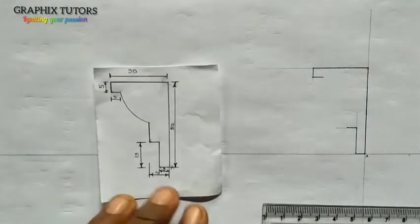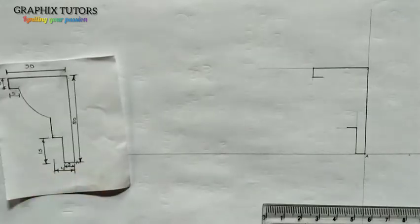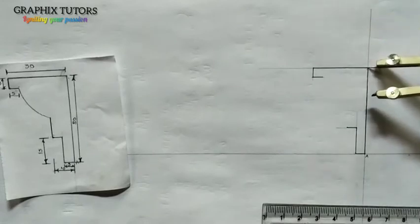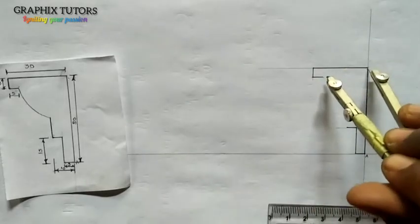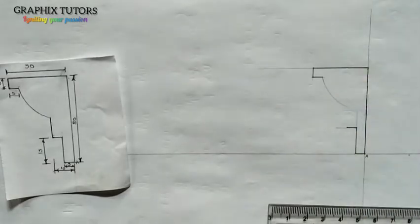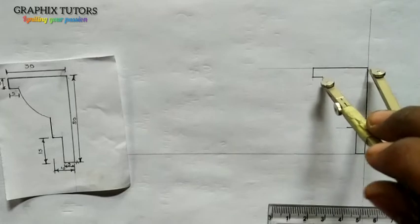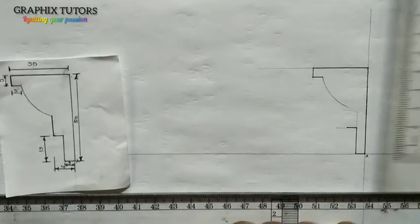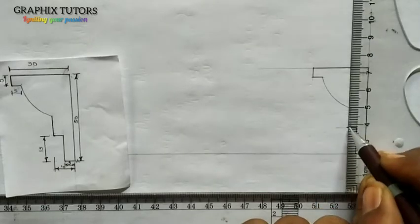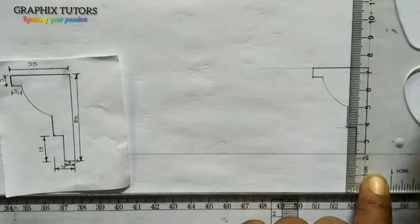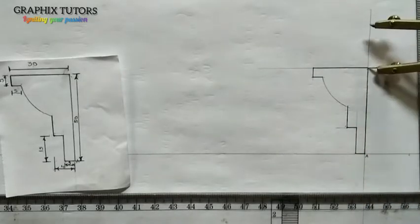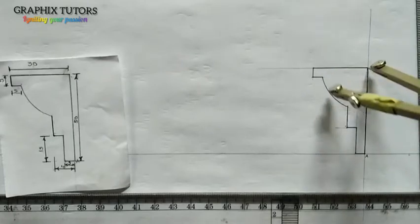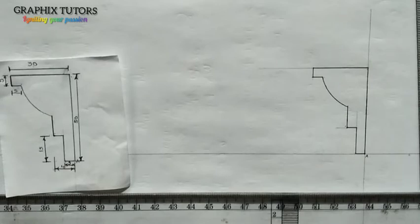Now to complete this shape, I'll take my compass and place it at this end here, then take it to the beginning of this line and draw a faint line. I'll set my T-square and set square on it, and where I measured the other 5, I'll move up to touch that line. That gives me the final point I need, and I have successfully reproduced this shape.